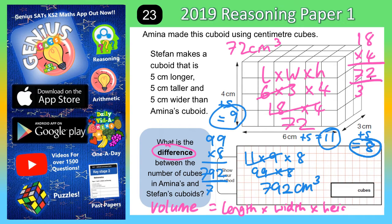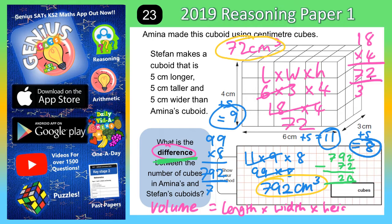As you can see, even though we've only added 5 centimetres onto each of the 3 measurements, it's actually made quite a big difference. Amina's was 72 centimetres cubed and Stefan's is 792 centimetres cubed. We've got one last step — it said to find the difference. So 792 minus 72: 2 take away 2 is nothing, 9 take away 7 is 2, and 7 take away nothing is 7. So the final answer is 720 cubes. It's a multi-step problem, but with clear thinking and remembering that a cuboid is length times width times height, you can figure it out. Final answer: 720.